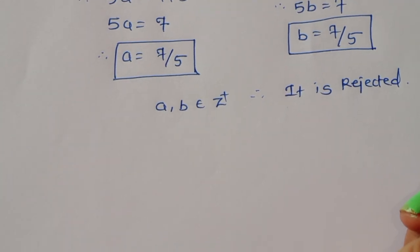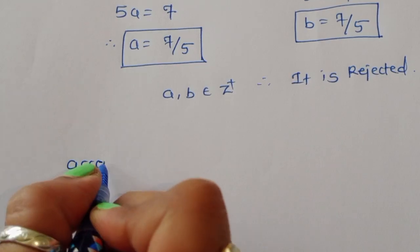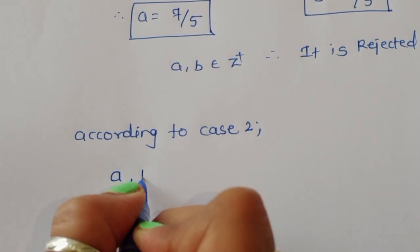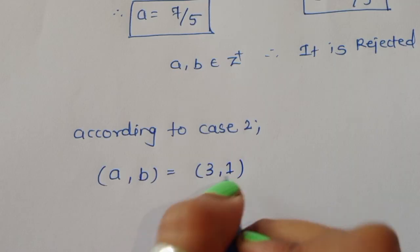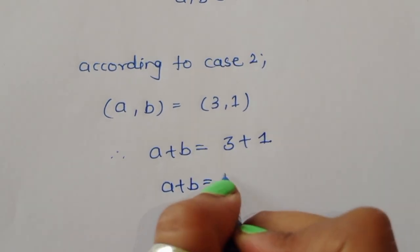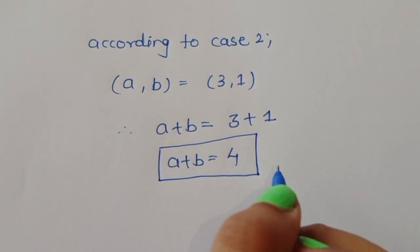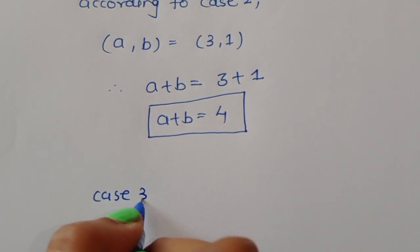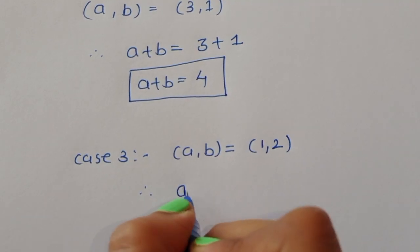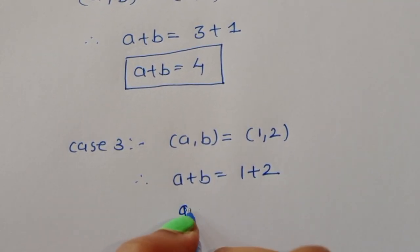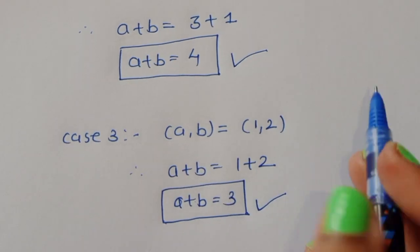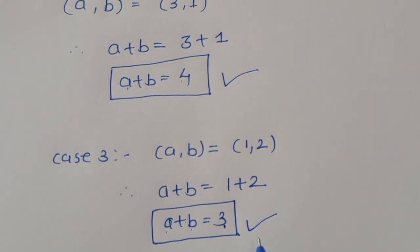So the valid solutions come from Case 2 and Case 3. From Case 2: a=3, b=1, so a+b=4. From Case 3: a=1, b=2, so a+b=3. Therefore the two possible values of a plus b are 4 and 3. Thank you.